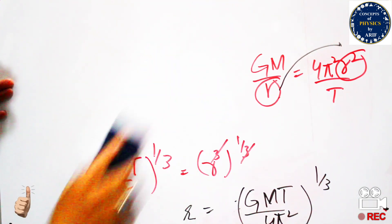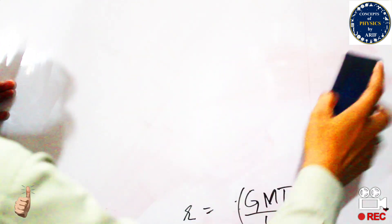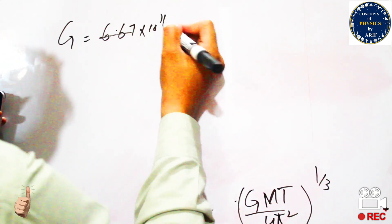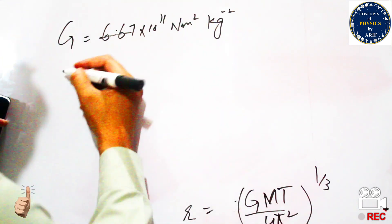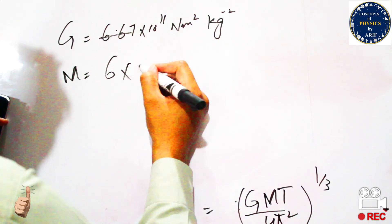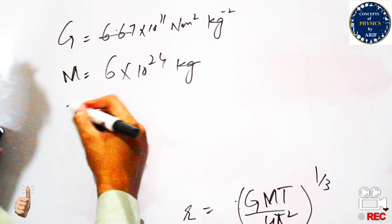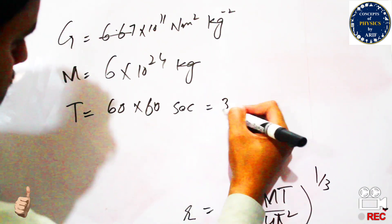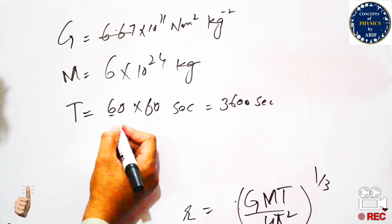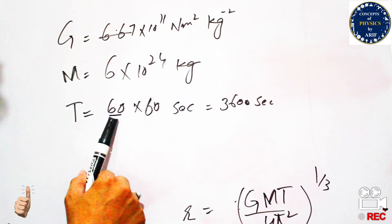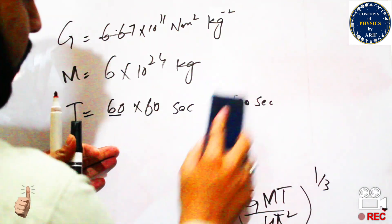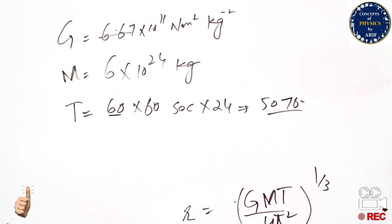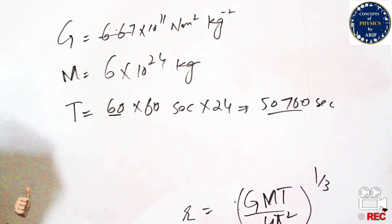The gravitational constant G is 6.67 × 10⁻¹¹ N·m²/kg², the mass of Earth M is 6 × 10²⁴ kg, and T is the time period for one complete day: 60 × 60 × 24 seconds, which equals 86,400 seconds.